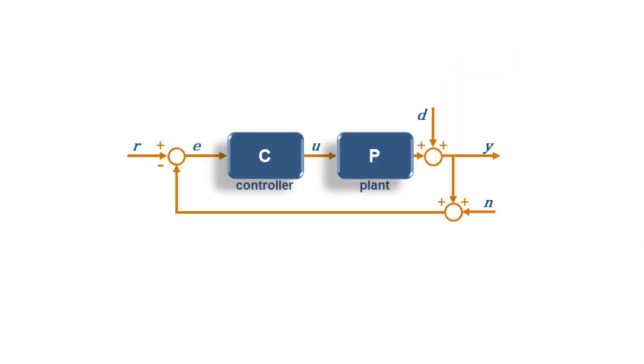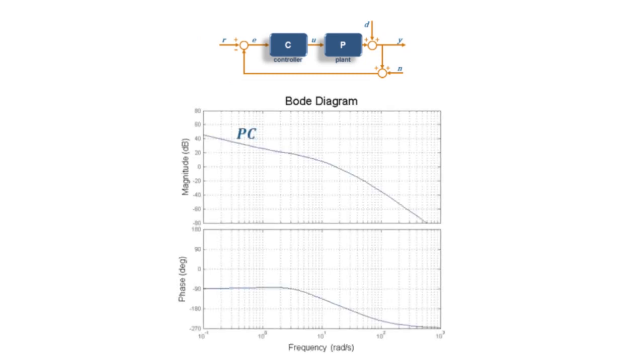To answer that, let us start by taking a look at the Bode plot of a generic open-loop transfer function. Because this is just the product of P times C on a logarithmic scale, the frequency trace PC will be the superposition of the trace of the given plant and the trace of the controller we are trying to design.